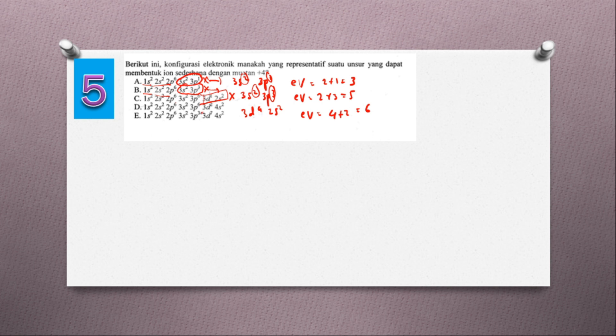Yang D: 2, 8, 8, 3D2, 4S2. Elektron valensinya 2 tambah 2 sama dengan 4. Jadi jawabannya adalah D.